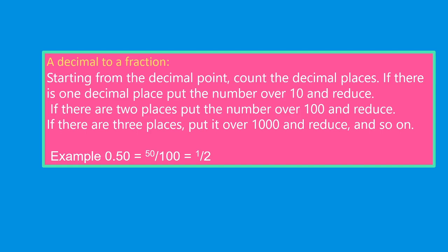If there are three places, put it over 1000 and reduce. And so on. Example: 0.50 equals 50 divided by 100 which equals 1/2.